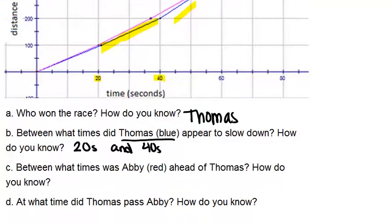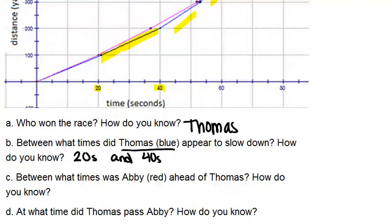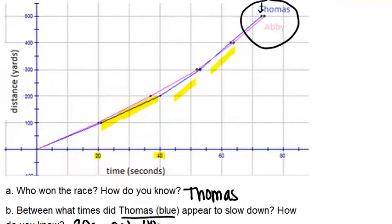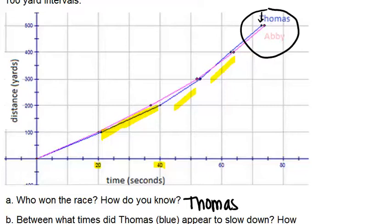All right part C, what times was Abby ahead of Thomas? How do you know? So to be ahead means that the pink line or the red line was above the blue line. And we can see that happened for a bunch of the time actually even though Thomas ended up ultimately winning. That happened right here and here she's still above here until about right here where their lines intersected. It's hard to tell at the beginning of the race but Abby was actually slightly ahead.